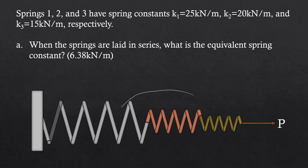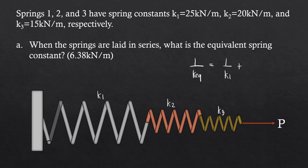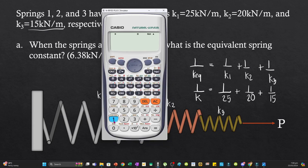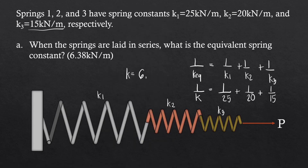Since we have a series connection, the first spring has spring constant k1, the second has k2, and the third has k3. For series connections, the equivalent spring constant is: 1 over k equivalent equals 1 over k1 plus 1 over k2 plus 1 over k3. So we have 1 over k equals 1 over 25 plus 1 over 20 plus 1 over 15. Solving this gives us 6.38 kN per m as the effective spring constant.